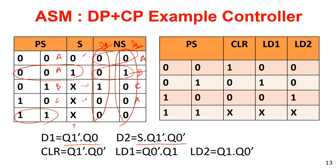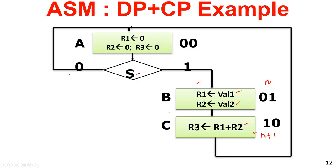What are the controller outputs? Controller outputs required are CLR, LD1 and LD2. Our model is clearly a Moore model — Moore FSM type modeling in ASM. In the current state, what kind of signals need to be generated: in state A all 3 registers need the clear signal; in state B load1 needs to be generated; in state C load2 needs to be generated.